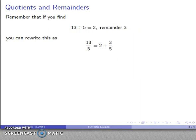So let's consider this problem, quotients and remainders. Remember that if I do a division and find a remainder, I can rewrite this as 13 divided by 5 equals 2 remainder 3. I can rewrite that as 13 fifths is 2 plus 3 over 5.